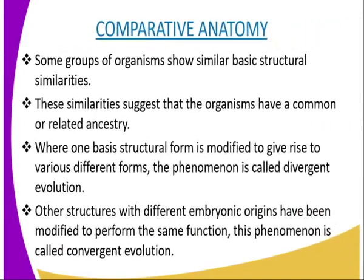Let us now explain comparative anatomy. When comparing the form and the structure of different organisms, we notice that some groups show basic structural similarities. These similarities suggest that the organisms have a common or related ancestry. Where the anatomical structures show many differences, such organisms have less evolutionary relationships. Where one basic structural form is modified to give rise to various different forms, a phenomenon is called divergent evolution.